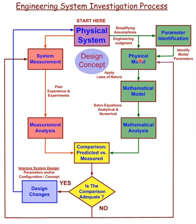The physical model will have variables, and numerical values for those variables need to be determined. This is called parameter identification — here we identify model parameters. Once we have a physical model, we then apply the laws of nature — Newton's laws, Maxwell's equations — to the physical model, not to the physical system or design concept.